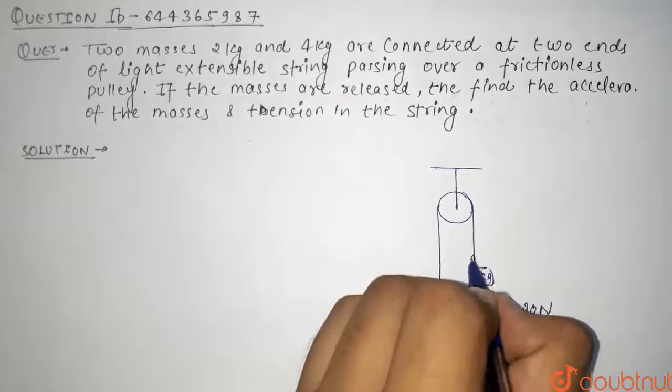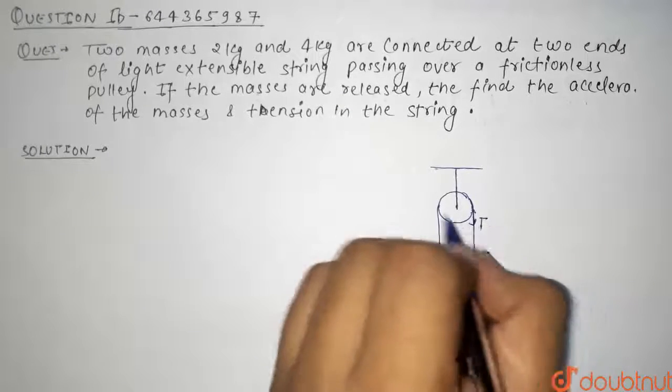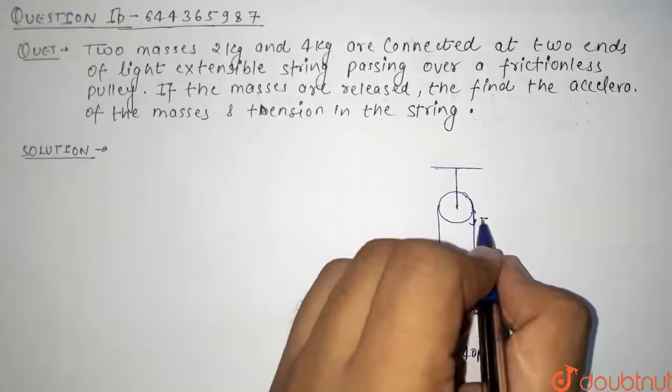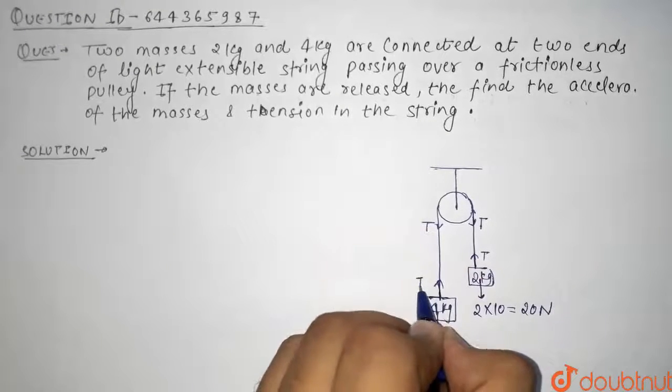Now let us assume that the tension is T here. Here also it will be T. Now since we have been given that it is frictionless, so tension this side will be equal to tension this side, that is T. So this will be also our tension that is T.